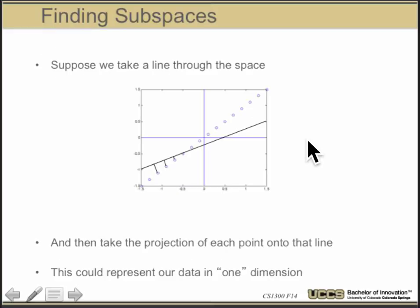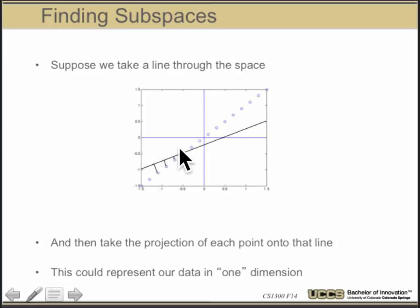Suppose we take some random line through our space. If that's the line I want to project onto — the 1D subspace — we just take all the points and project them perpendicularly. You can sort of see some of them here. This gives you an idea: we just project perpendicularly onto the line, and that allows us to represent our data in 1D.